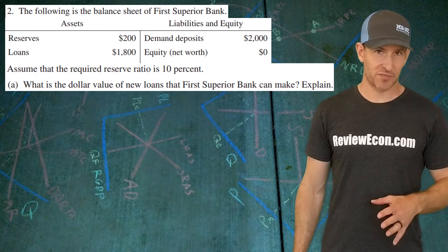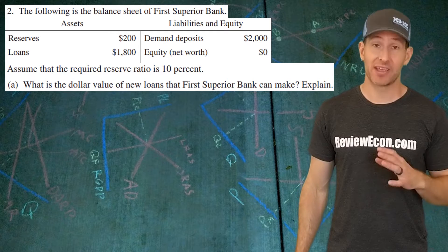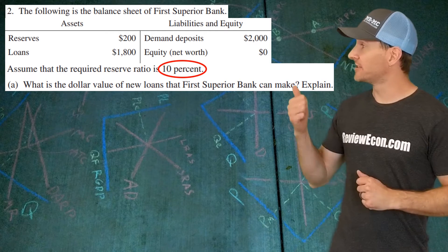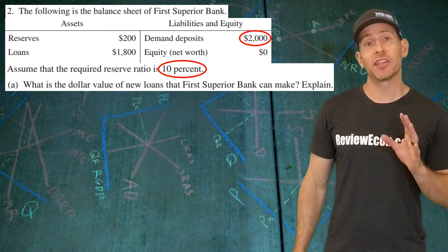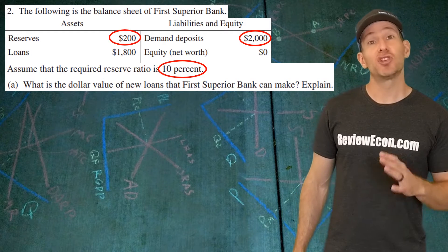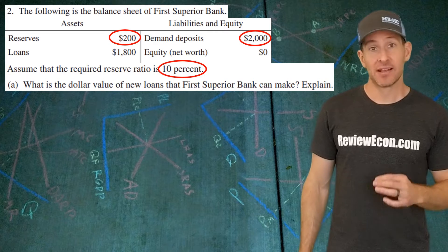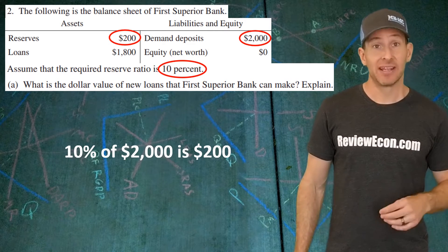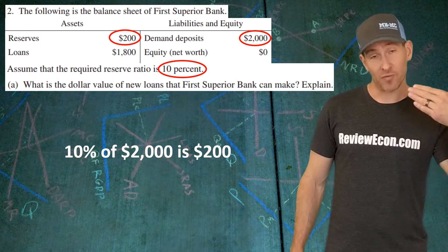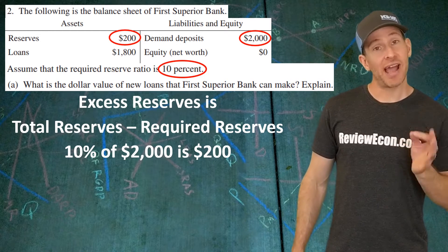Now this question starts off with First Superior Bank. We're trying to find out, based on this bank balance sheet, how many dollars worth of loans they can currently make out. The way you figure this out, given the 10% reserve requirement we have here, is you take a look at the demand deposits. Checkable deposits or demand deposits are the only thing that the reserve requirement applies to. Currently, First Superior Bank has $200 in their reserves, that is total reserves. It's both excess and required added together. 10% of the $2,000 they have in the demand deposits is $200. So we take a look at the total reserves, subtract those required reserves, and we find out they have nothing left that they can loan out.